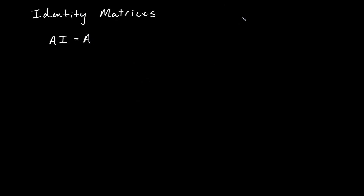That's multiplicative identity. With real numbers it's the number one — the idea that if I take one times any number, I get the same number. Same with an identity matrix here.